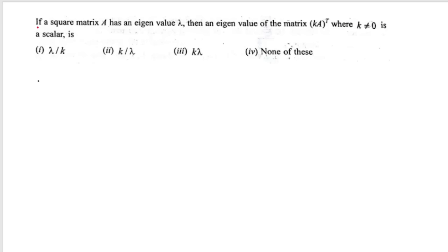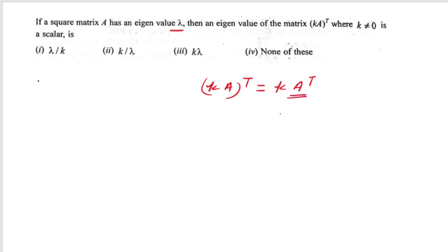If A is a square matrix with eigenvalue λ, what is the eigenvalue of K·Aᵀ? We know Aᵀ has the same eigenvalues as A. So K·Aᵀ has eigenvalue K·λ. The correct option is the third one: K·λ.